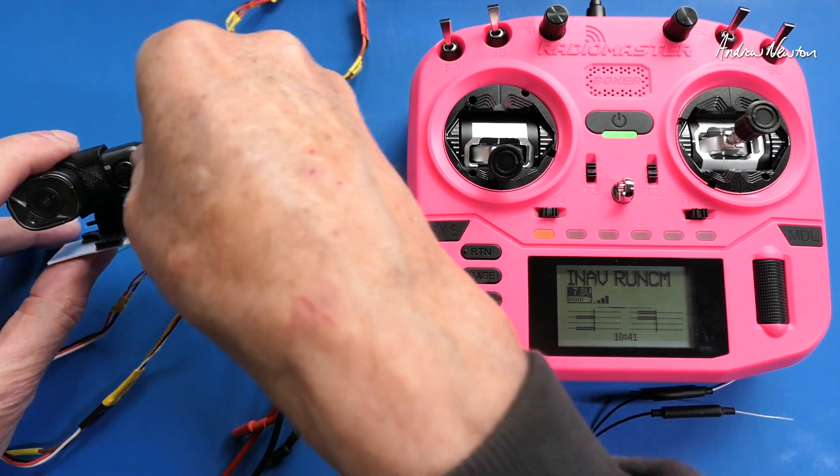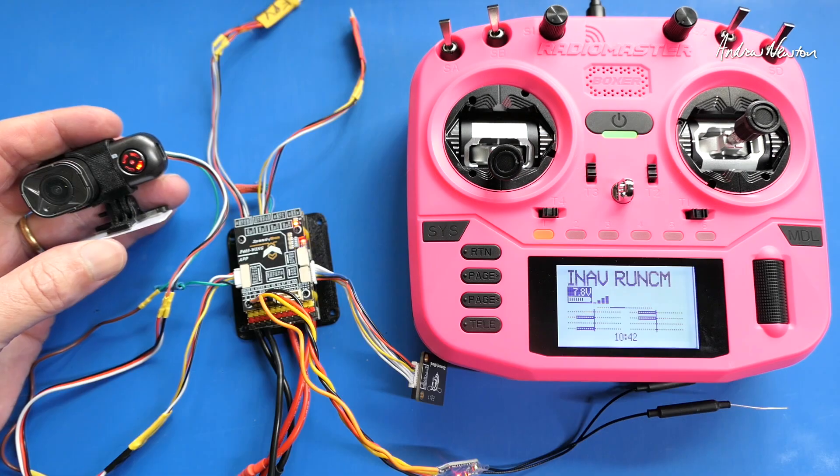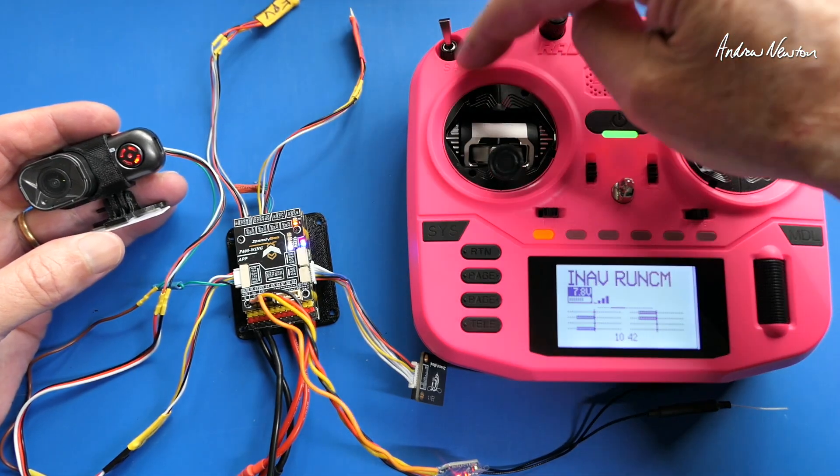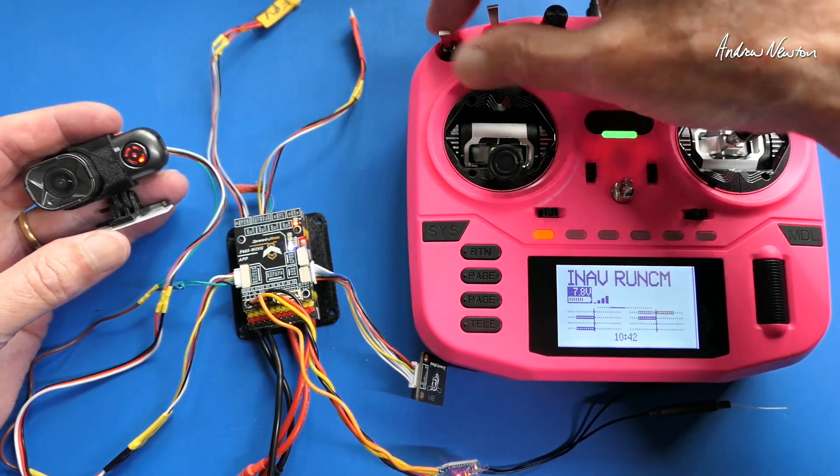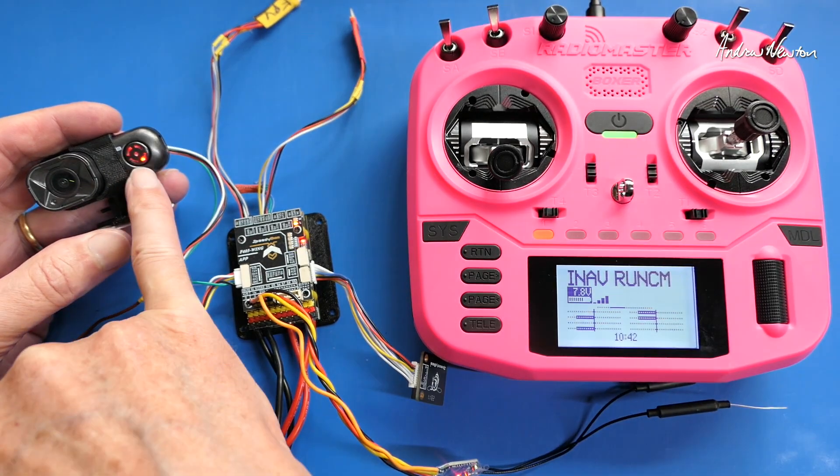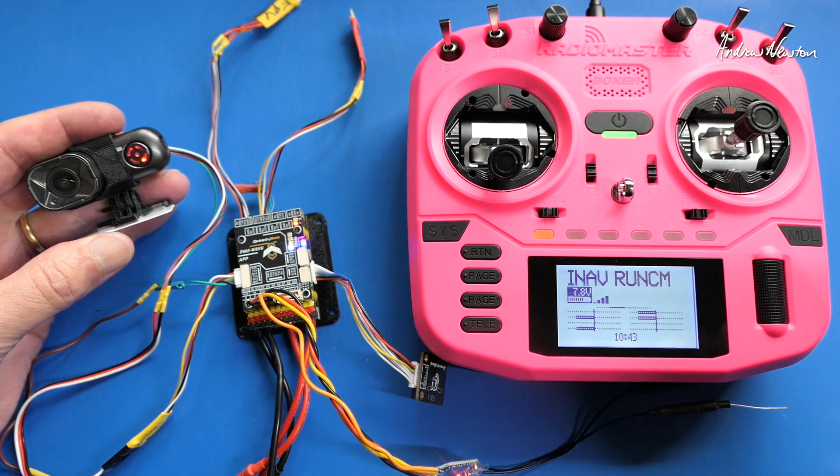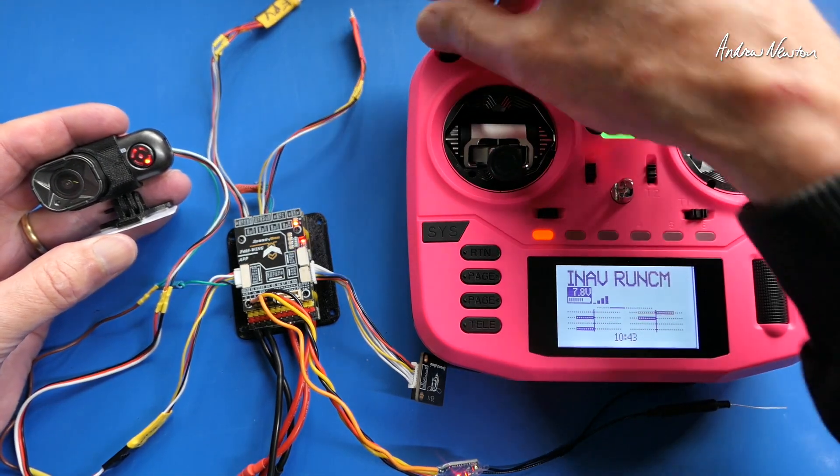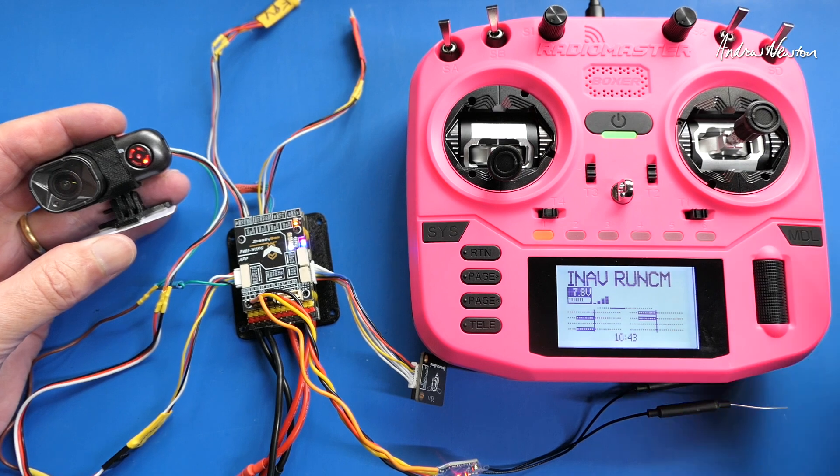I've got the camera on auto recording so I'll just stop that there. Now operating the SA switch which is channel 13 on and off, and we've got video recording there. On and off again to stop it. There we go, that's stopped.